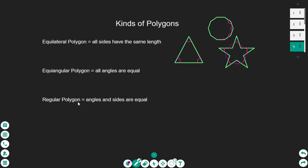Now let's talk about regular polygons. Regular polygons have angles and sides that are equal. So are any of these shapes regular — meaning both angles and sides are equal? Well, the answer is yes. It goes back to what we were just talking about: which shapes are both equiangular and equilateral? If they're both, they're considered regular. This first one, number one, is a regular polygon — the angles are equal and the sides are equal. Number two is a regular polygon — angles are equal, sides are equal. Number three is not a regular polygon, because the angles are not equal, although the sides are.